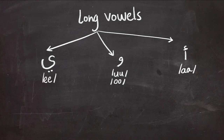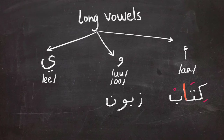To demonstrate how they sound in a word, I'm using the word 'kitab' as an example for alif. As you can hear, kitab contains the alif long vowel and you can see it as a letter in the word. The same applies to 'zaboon,' where you can hear the waw. The last example is 'sami',' where you can also hear and see the letter ya.